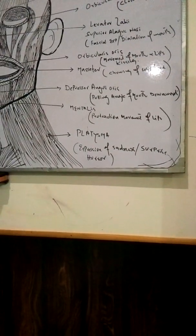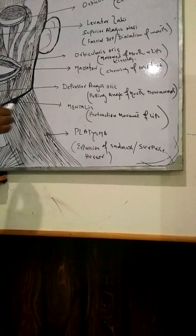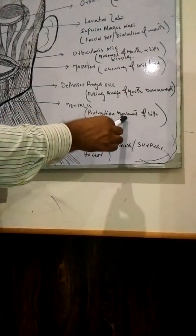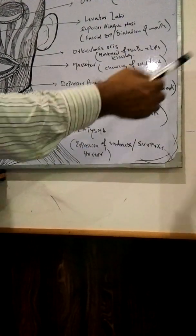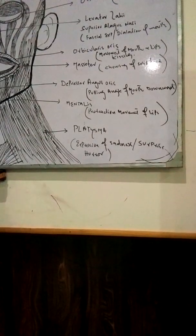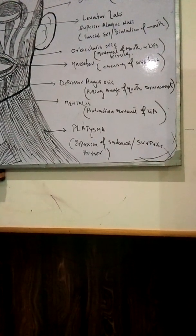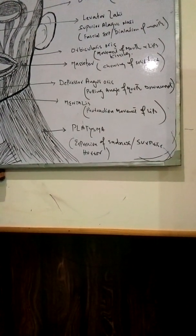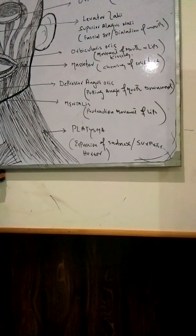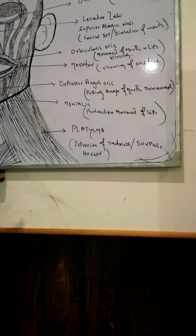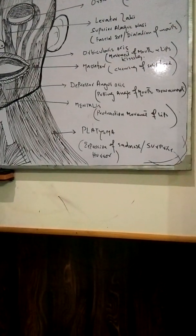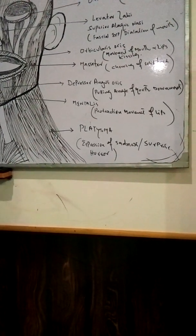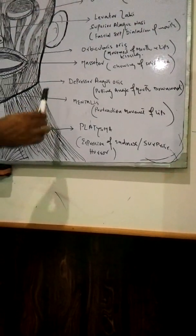This one is called the mentalis muscle. The mentalis muscle helps in the protraction movement of the lips. There are two types of lip movements: retraction and protraction, and the protraction movement is definitely helped by the mentalis.